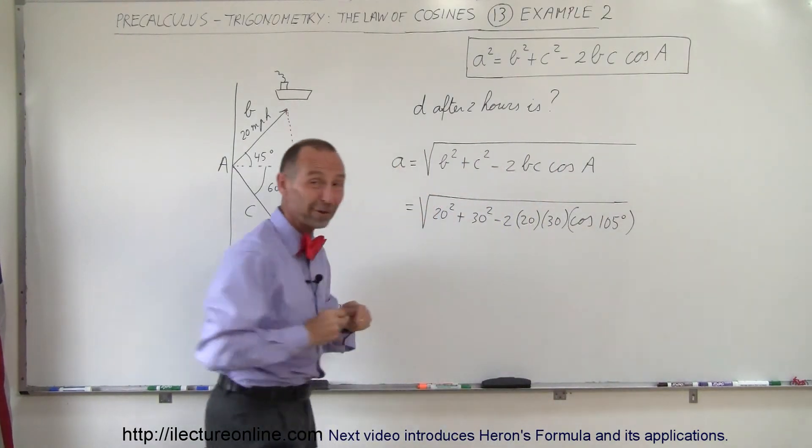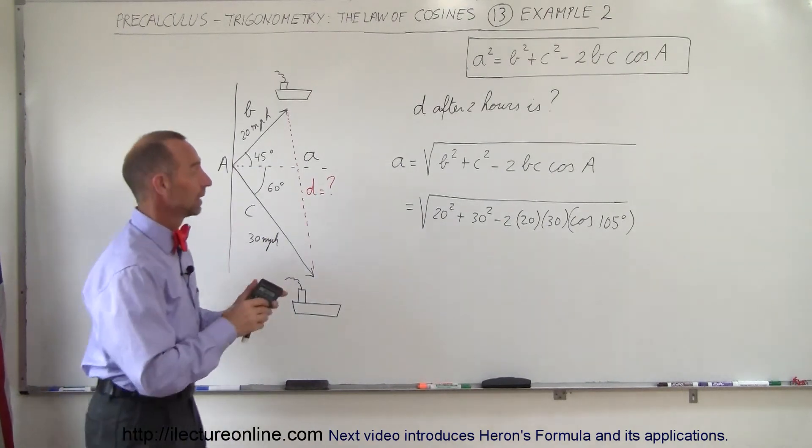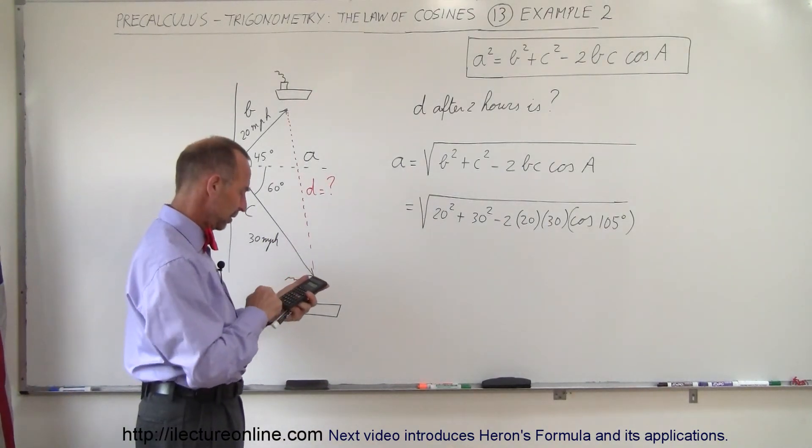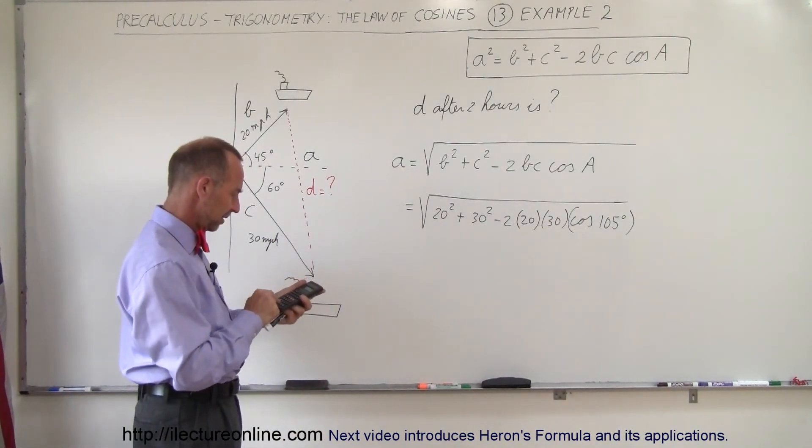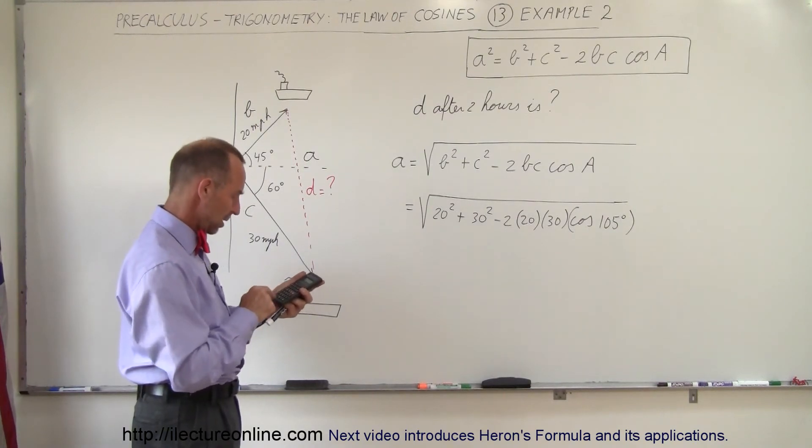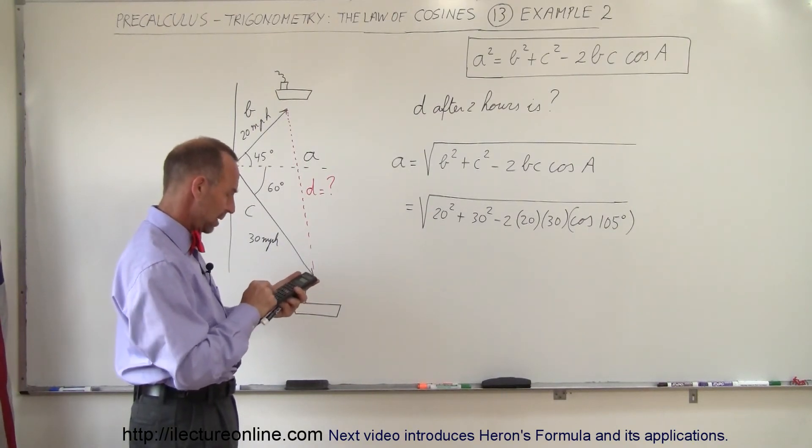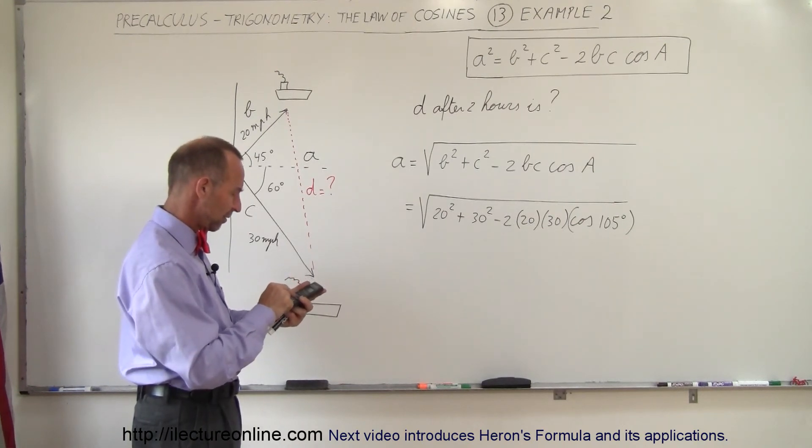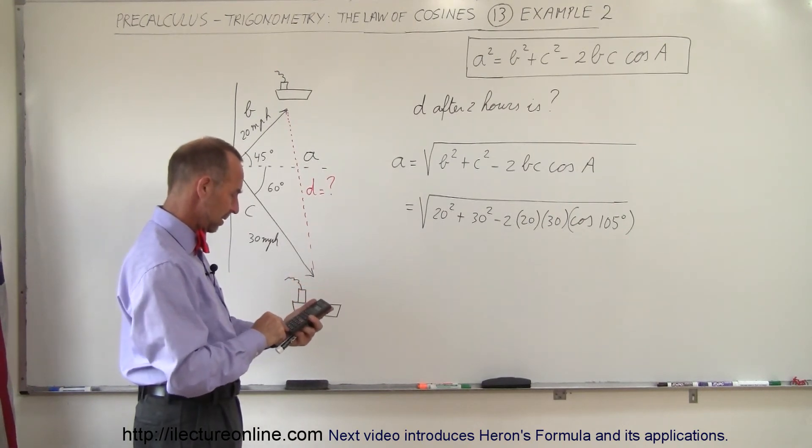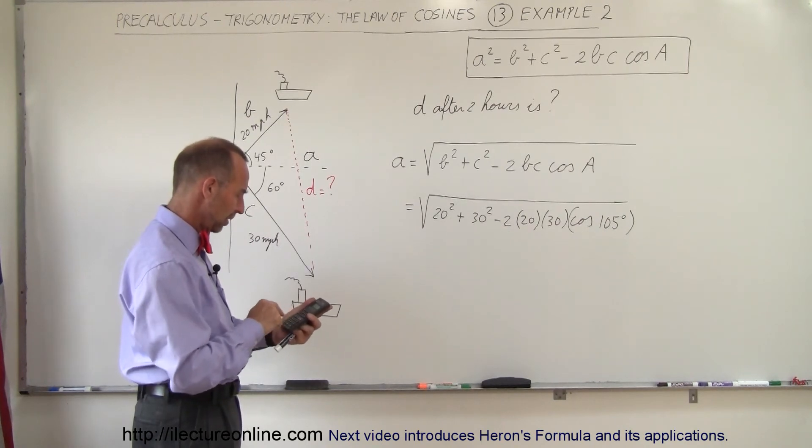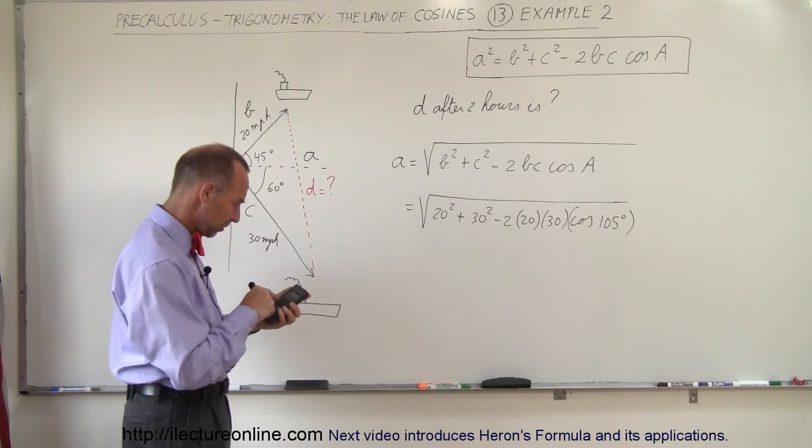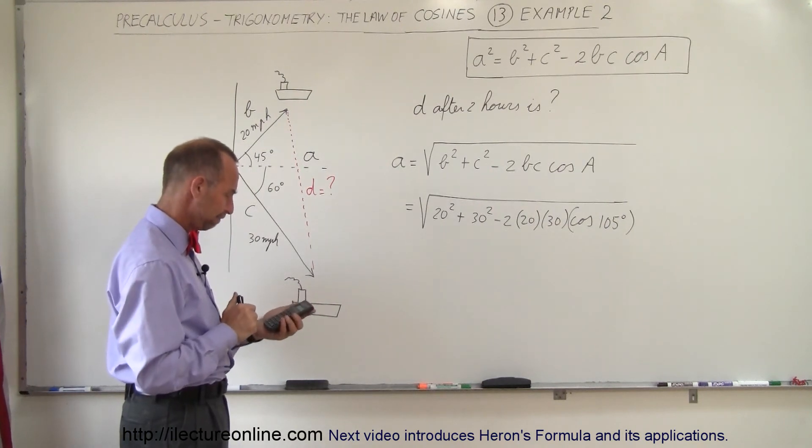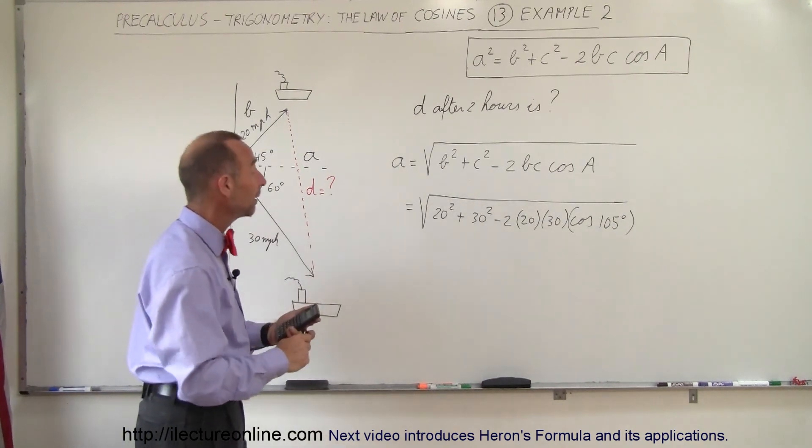All right, let's see what our calculator can do for us. So we have 400 plus 900 minus the quantity 2 times 20 times 30 times cosine 105, close parentheses, equals, and then we take the square root, and we get 40.1 miles.